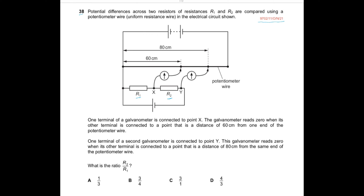The uniform cross-section makes the resistance uniform. In the electric circuit shown, one terminal of the galvanometer is connected to point X. The galvanometer reads zero when its other terminal is connected to a point at a distance of 60 centimeters from one end of the potentiometer. So it is balanced at a length of 60 cm, meaning the PD across this part equals the PD across that part.